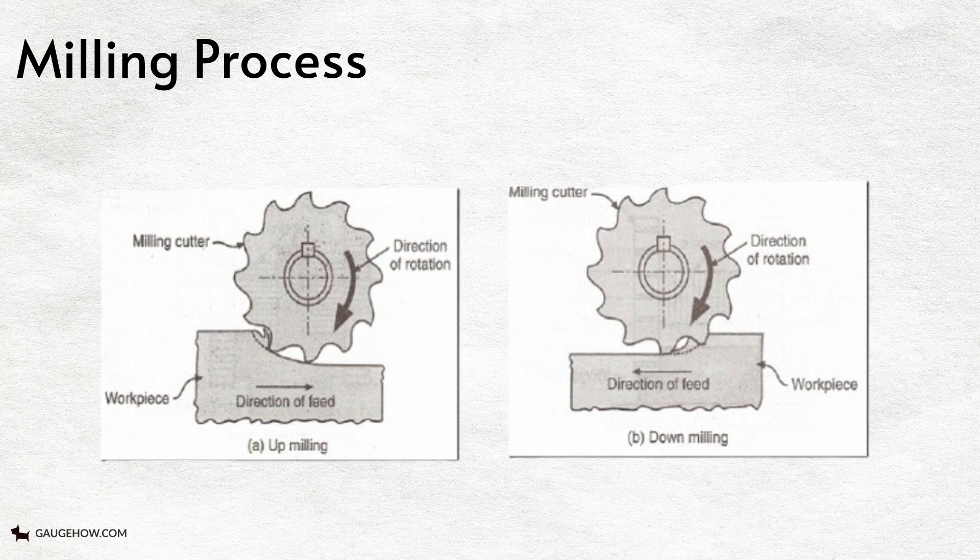Technically down milling is a superior process but up milling is commonly used. Down milling is not used unless the milling machine is fitted with a backlash eliminator.